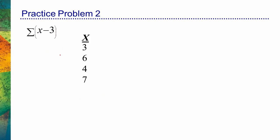Let's look at another practice problem. Here I'm being asked to compute the sum of the quantity x minus 3. Step one: I need to subtract 3 from every single x score before I can sum anything up. Step two: I'll create a column labeled 'x minus 3' and subtract 3 from every single score. 3 minus 3 is 0, 6 minus 3 is 3, 4 minus 3 is 1, 7 minus 3 is 4. Step three: do I have a column labeled with what I've been asked to sum up? Yes. I sum up the column: 0 plus 3 is 3, plus 1 is 4, plus 4 is 8. The sum of the quantity x minus 3 equals 8.